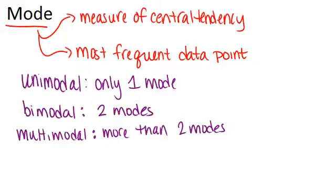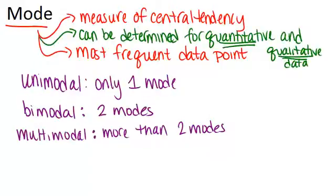Another thing that's important to realize about modes is that they can be determined for both quantitative data, which is like numbers, or qualitative data, which could be colors or anything that's not a number. This is interesting because this is the only measure of central tendency that can do this. Both the mean and the median only work for quantitative data.